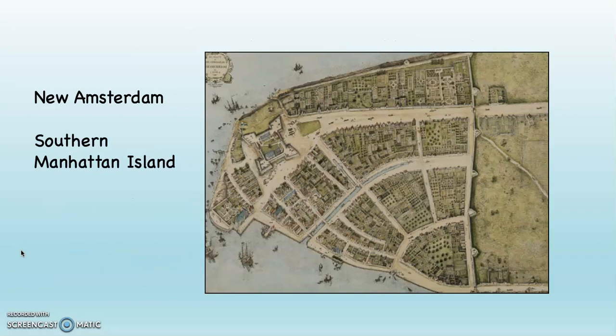This is a map of New Amsterdam, the southern part of Manhattan Island. The map is oriented east-west rather than north-south, but that is indeed the southern part of Manhattan Island as it looked when the Dutch controlled it. You can see the wall over here — that wall is no longer there, but there is a street there. Wall Street, exactly right. And Broadway, the very famous Broadway that runs from the southern to the northern part of Manhattan Island, was an indigenous trail that ran from south to north along the island.